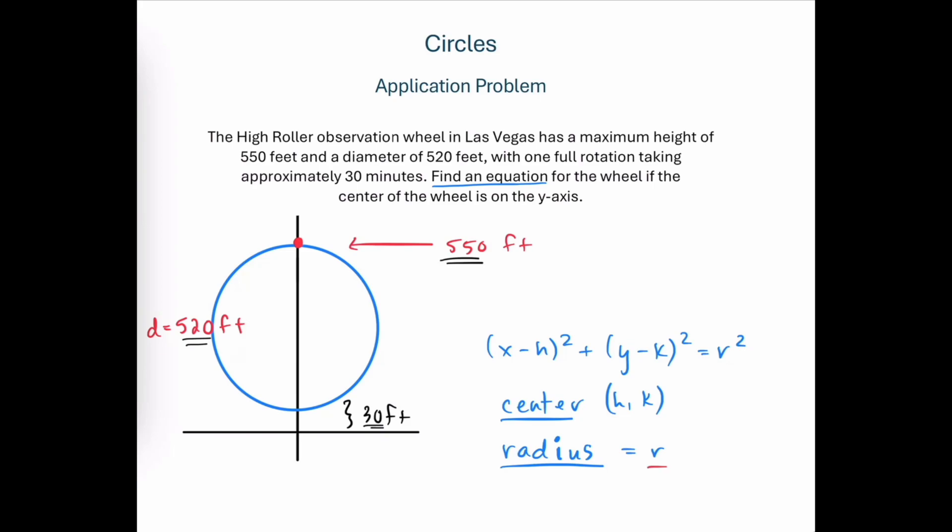Let's first consider the radius. We know the diameter is 520 feet, so that means that the radius is going to be half that distance, or 260 feet.